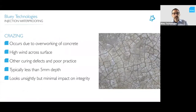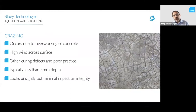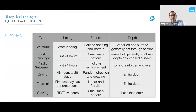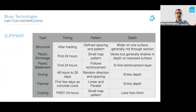The last type is crazing. This is seen on the surface and usually occurs due to overworking of the concrete or high winds across the surface, forming a crust that breaks up. It's usually very shallow — typically less than 5 mm depth — so it looks unsightly but usually has minimal impact on the actual integrity. This is just a summary of the different types of cracks, when they occur, and the patterns you might see.